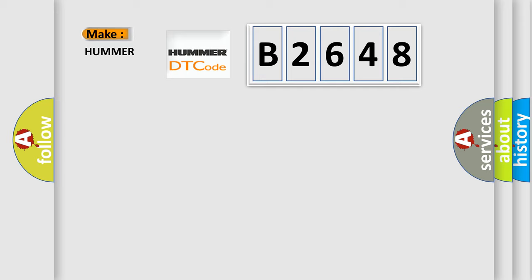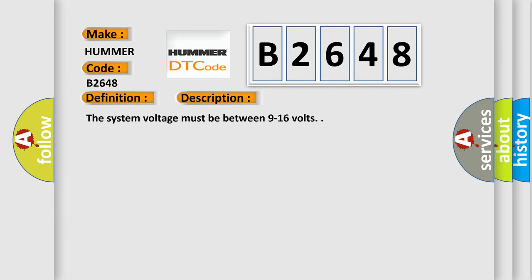So, what does the diagnostic trouble code B2648 interpret specifically for car manufacturers? The basic definition is ambient light sensor circuit high. And now this is a short description of this DTC code.